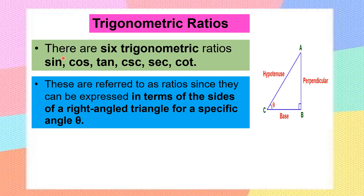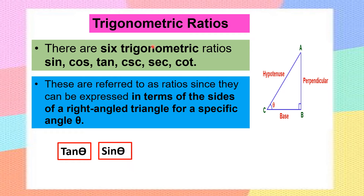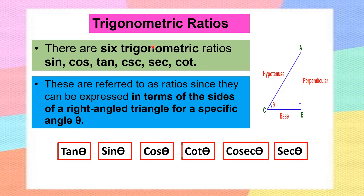We have six trigonometric ratios: sine, cosine, tangent, cosecant, secant, and cotangent. With respect to angle theta, these six ratios are represented as sine theta, cosine theta, tan theta, cot theta, cosecant theta, and secant theta.